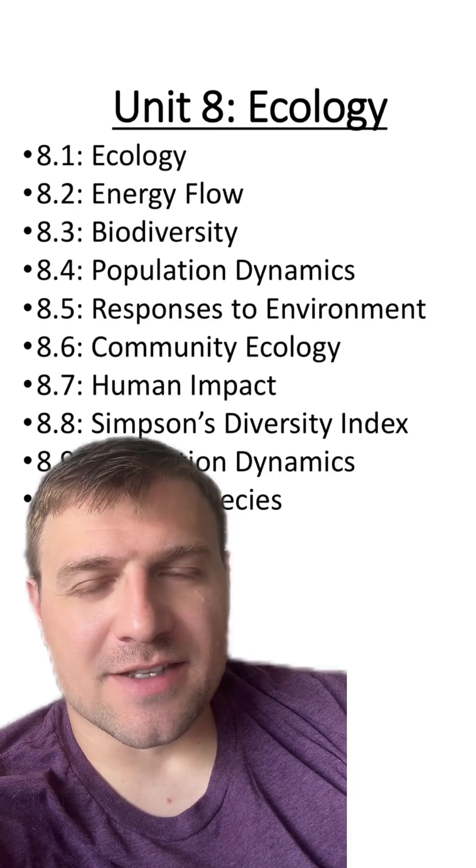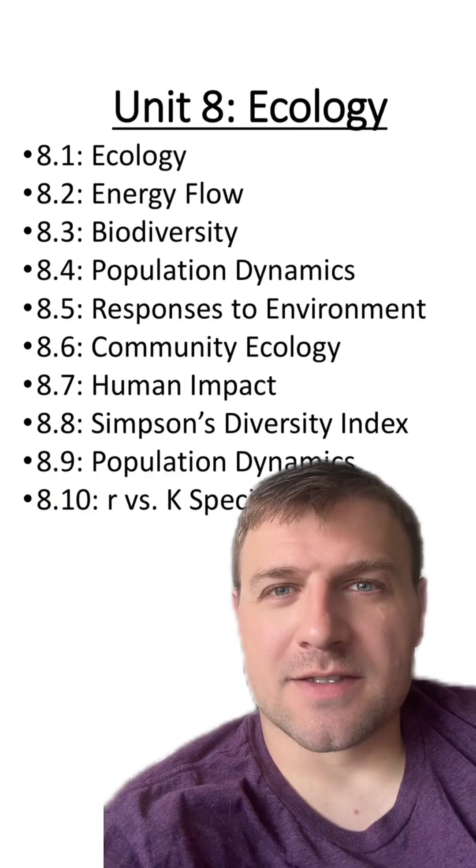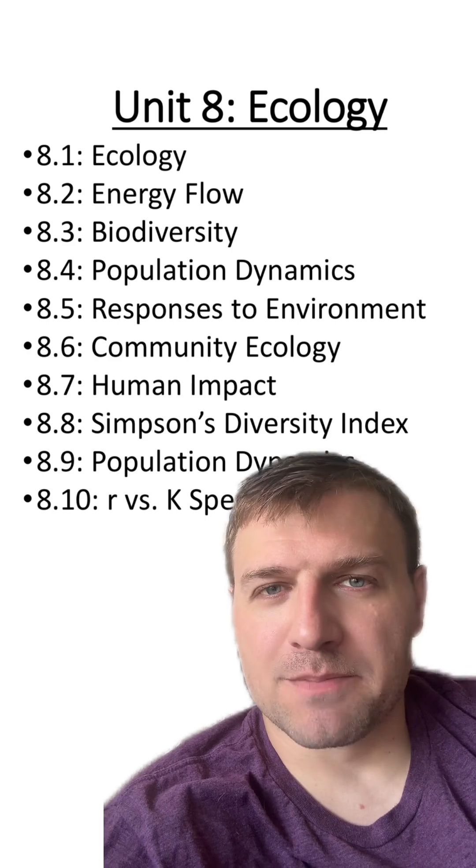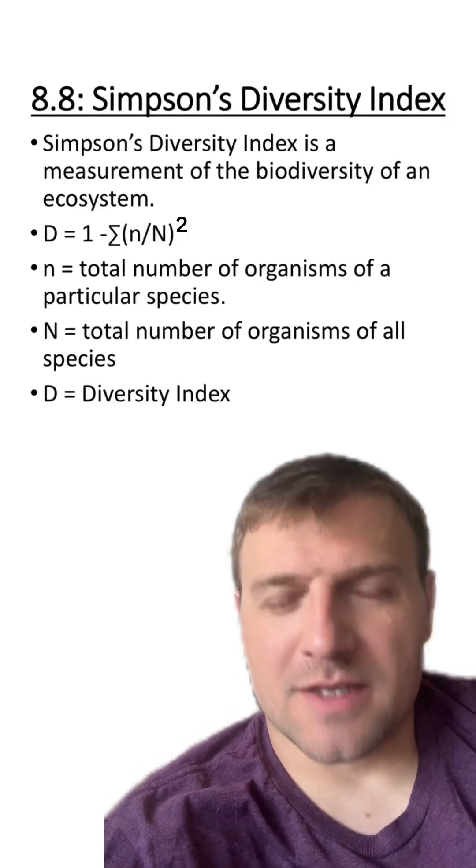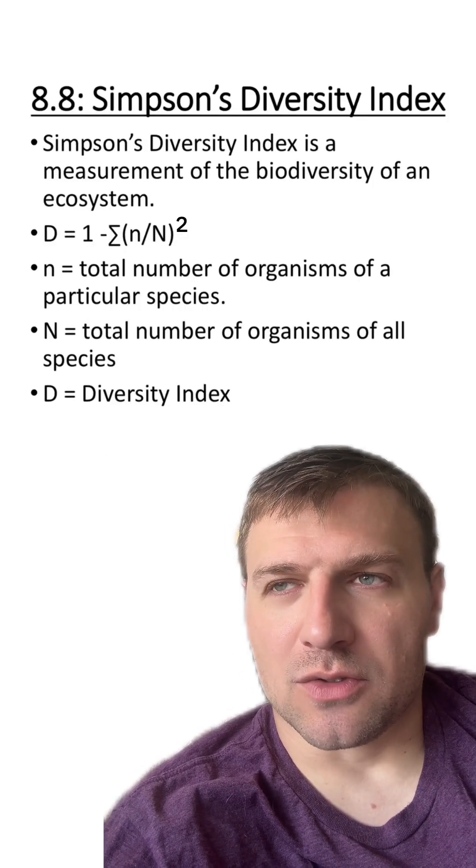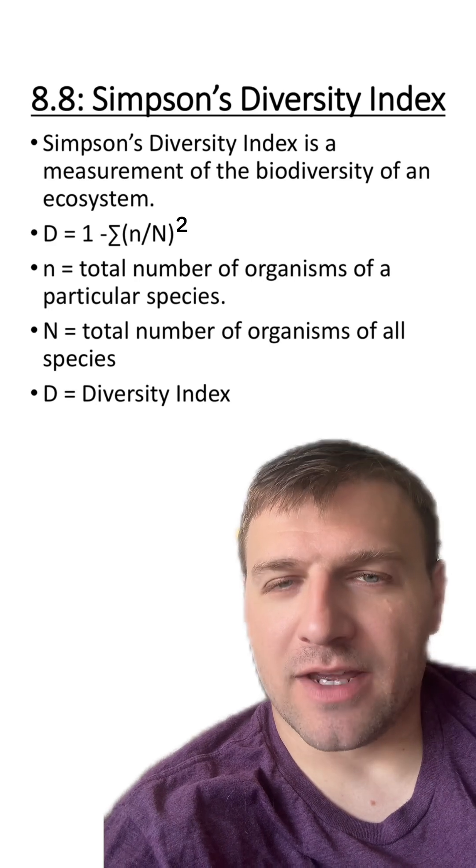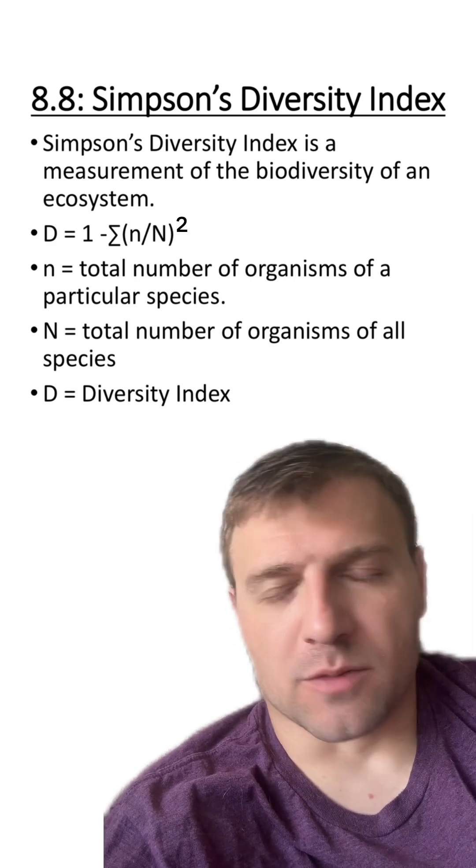Hello, AP biology students. Let's go over the ninth section in unit eight. In this section, we're going to cover a topic called Simpson's Biodiversity Index. This is basically an equation we can use to look at how biodiverse an ecosystem or a community is.